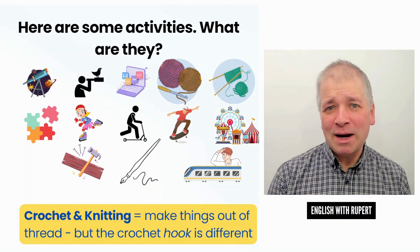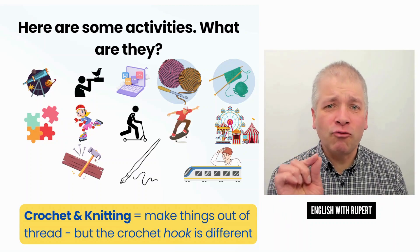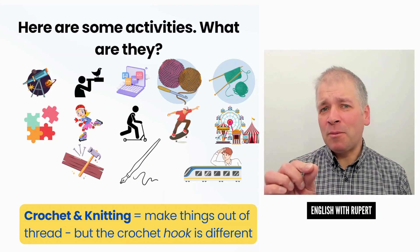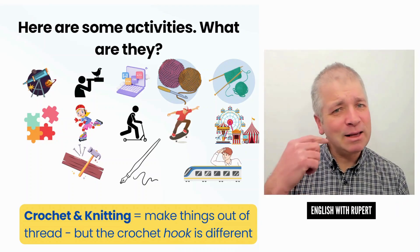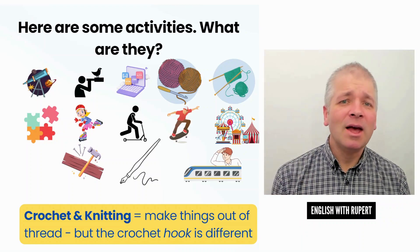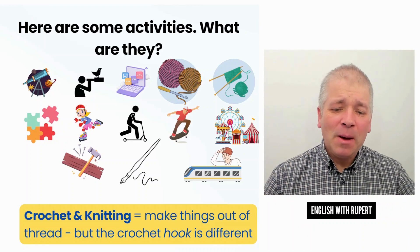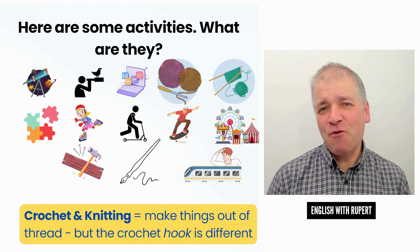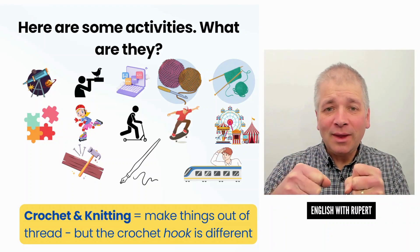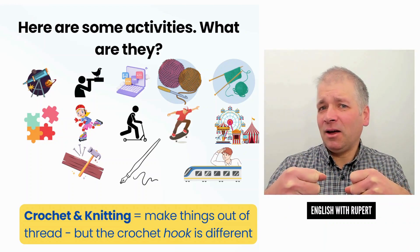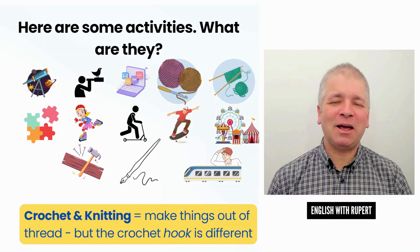These two activities are quite similar, but with a key difference. The first one on the left is crochet — it comes from a French word, so we don't pronounce the final T: crochet. The second word is knitting. They're both to do with making things out of thread. You get your needles and you can end up making nice things out of wool or thread — blankets, clothes, anything like that.